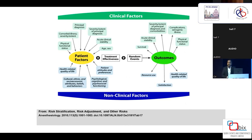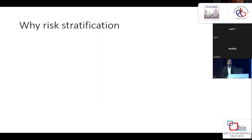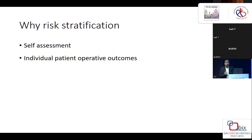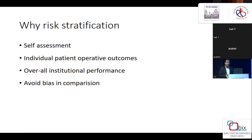So what are we assessing? We are assessing outcomes. The outcomes are dependent on myriad factors — clinical factors, non-clinical factors, patient factors, treatment effectiveness, and random events which are absolutely not in our control. Why do we need risk stratification? First, it is a self-assessment tool. Second, individual patient operative outcomes become clear. Third, overall institute or center performance is evaluated. And fourth — very importantly — it avoids bias. You cannot say that my center is better than yours until we do a proper risk stratification.